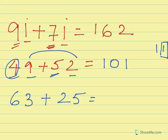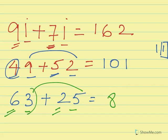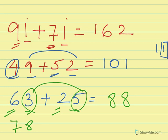Next example: 63 plus 25. We can see that 3 plus 5 is 8, a single-digit number, so it's a non-carrying number. We add 6 plus 2 to get 8, and 5 plus 3 to get 8. Our answer is 88.